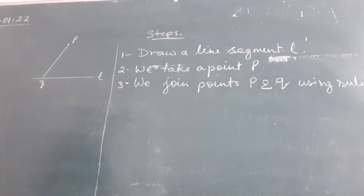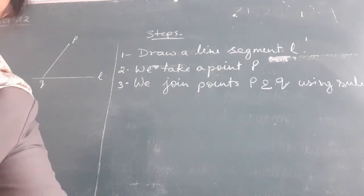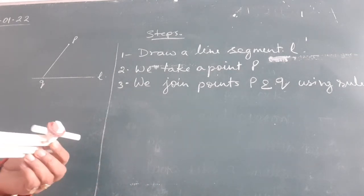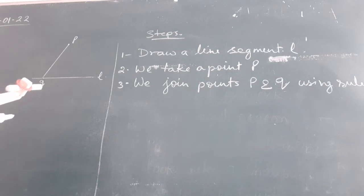Along with construction, you also have to write the steps of construction. Now in the next step, we take the compass and we place it on point Q and draw an arc. Just see here, I have placed the compass and I am drawing an arc in this way from here till here.